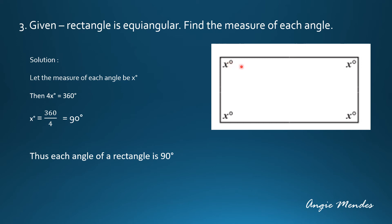Yes, it is the sum of the measures of the interior angles of a polygon. So keeping X degrees on one side, we will simplify this. So we get 360 divided by 4 which is equal to 90 degrees. So each angle of a rectangle is 90 degrees. What property did we use here? That the rectangle is a parallelogram with equal angles.